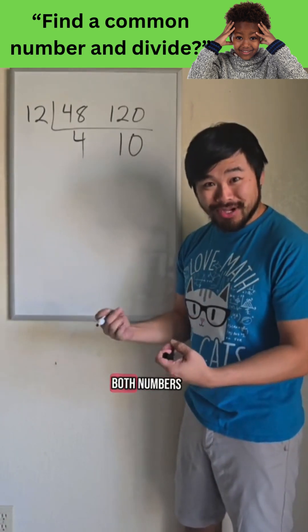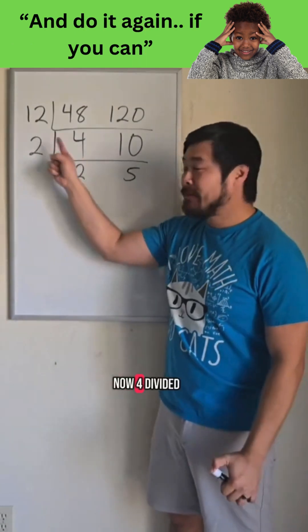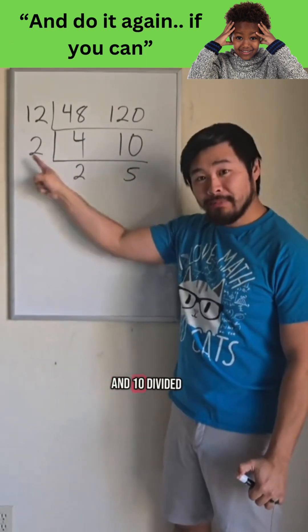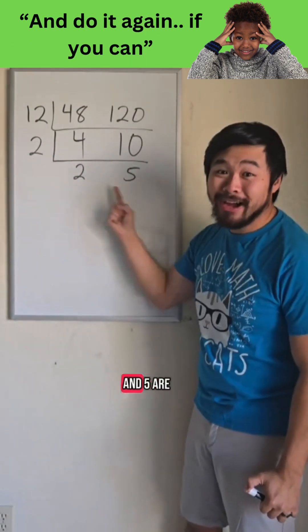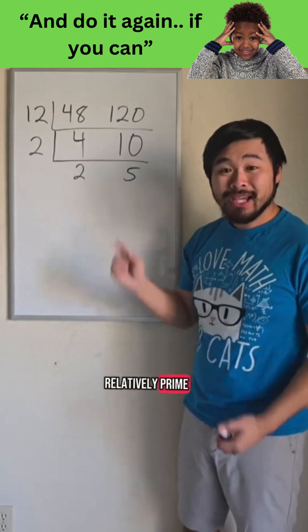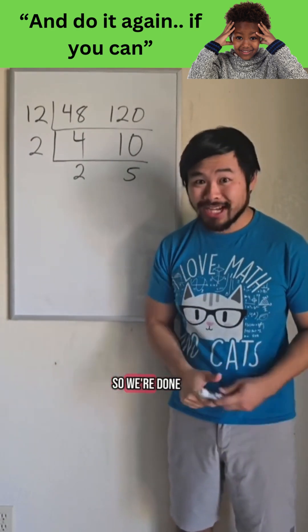So let's factor out a 2 from both numbers. Now, 4 divided by 2 is 2, and 10 divided by 2 is 5. And 2 and 5 are what we call relatively prime, meaning they have no factor in common besides 1. So we're done.